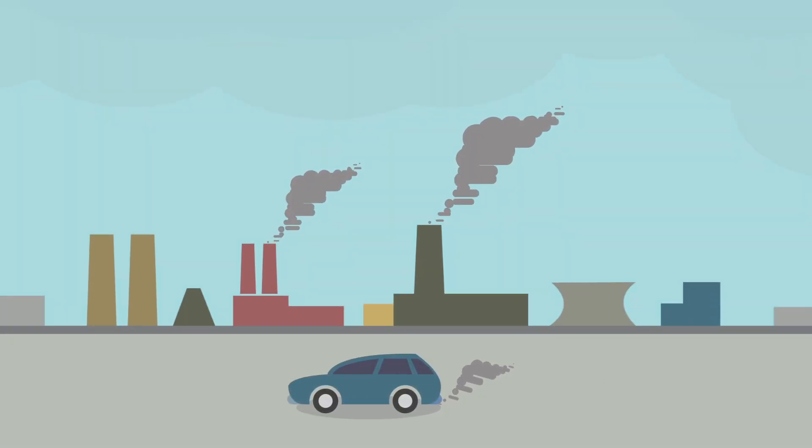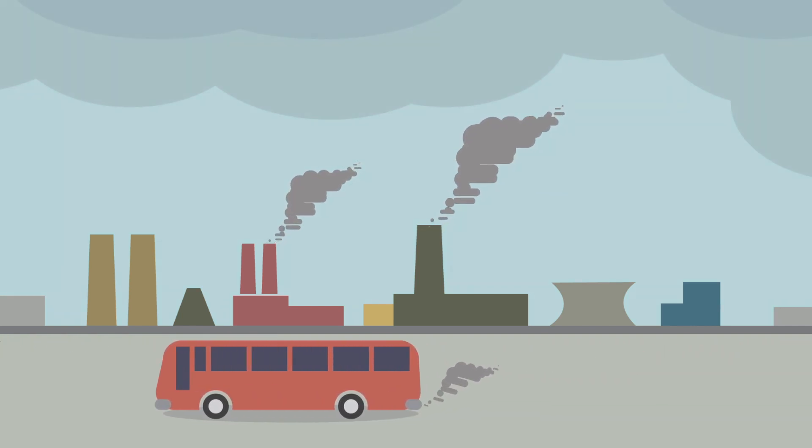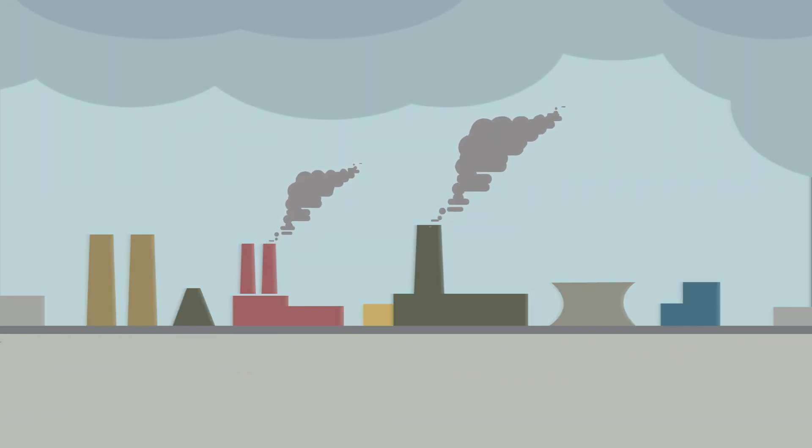For example, burning fossil fuels like coal and oil releases more carbon dioxide into our atmosphere. These extra greenhouse gases can cause the atmosphere to trap more and more heat, leading to a warmer Earth.